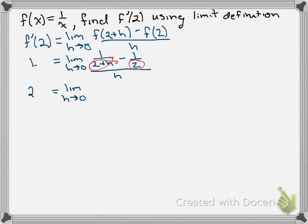So when we put that together we need to multiply this one by 2 over 2 and this one by 2 plus h over 2 plus h. So what this next step will look like when we're done is 2 over 2 times the quantity 2 plus h